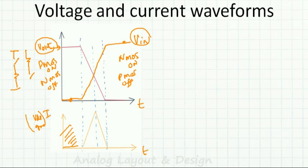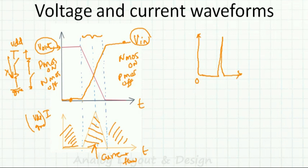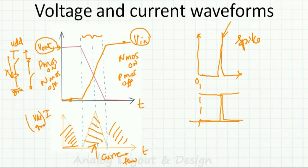In the static regions, one switch is open and one is closed, so there is no path for current. Only during the transition region — when both transistors are momentarily on — does a current flow from VDD to ground. The current waveform appears as a spike: zero in static conditions, and a pulse only during transitions of VIN and VOUT.